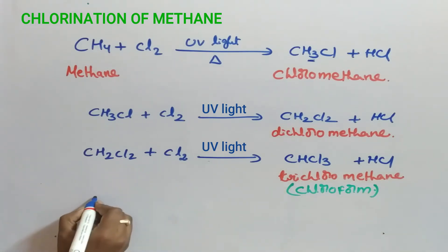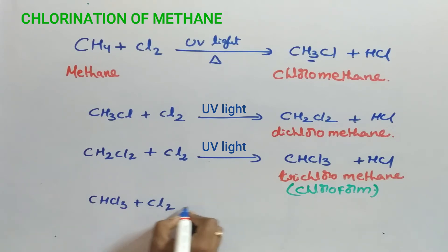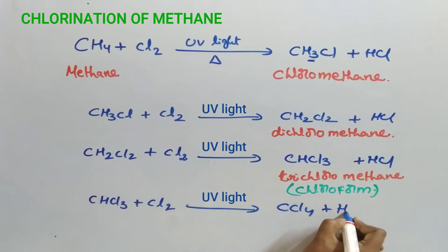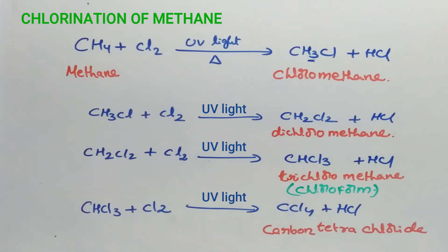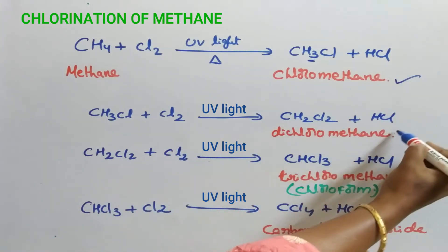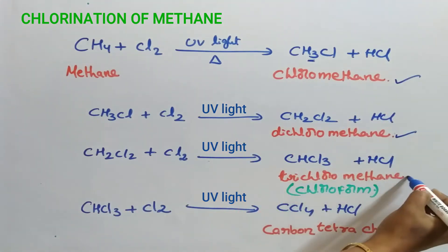Again this trichloromethane, that is CHCl3, reacts with chlorine and thereby forms CCl4 and HCl. It is known as carbon tetrachloride. Finally we have four substitution products: chloromethane, dichloromethane, trichloromethane, and carbon tetrachloride.